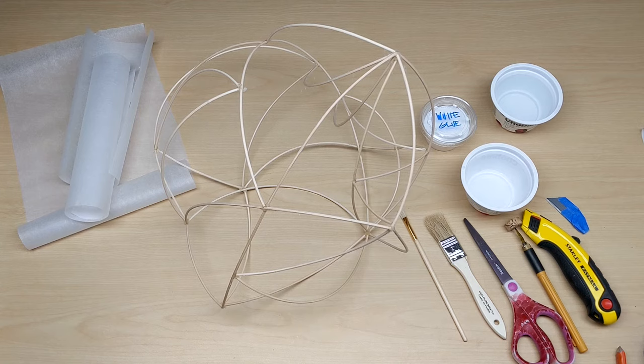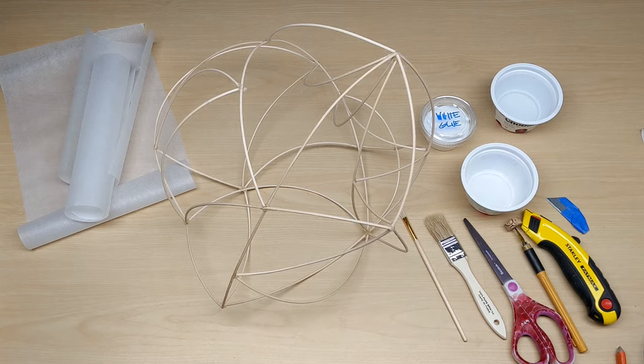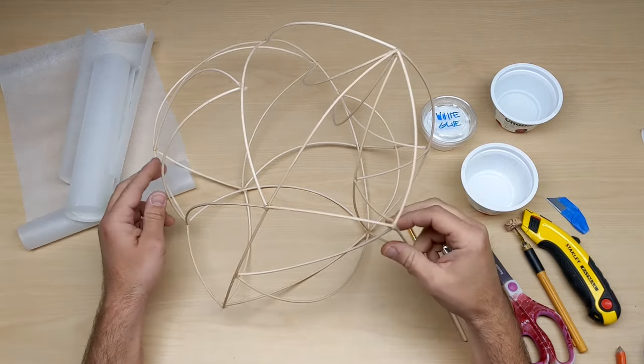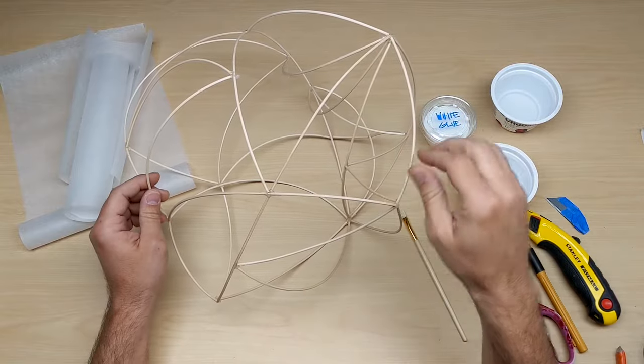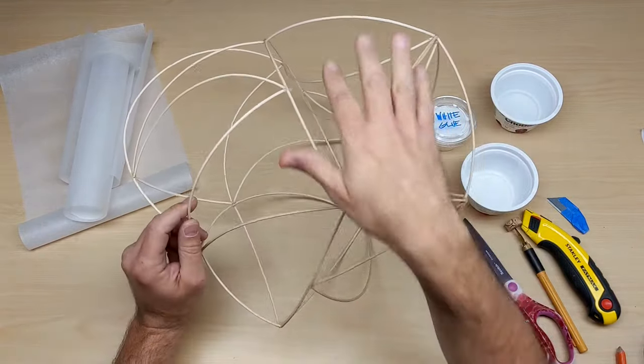Once your form is built, we're going to cover it with tracing paper. This requires some patience too, as you need to go step by step and shape by shape. We can't just cover the entire piece. We need to pick a section, glue it down, let that one dry before we can do the next one.